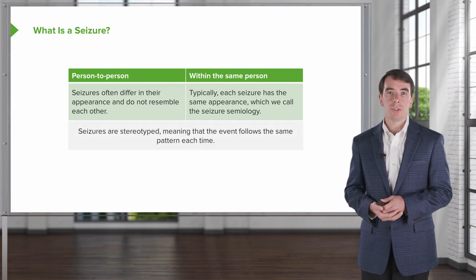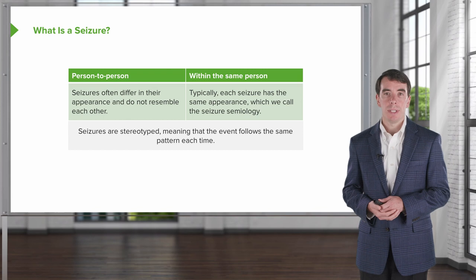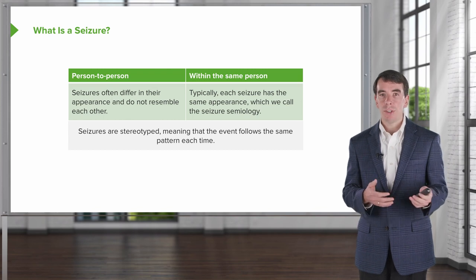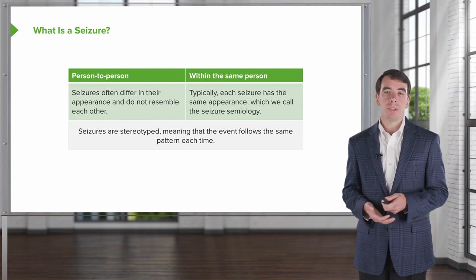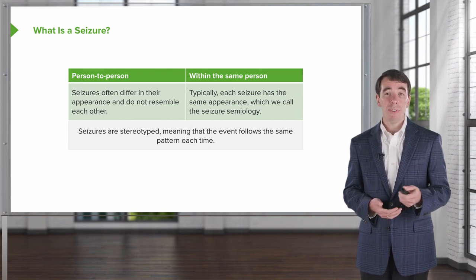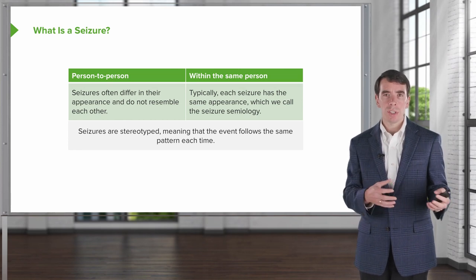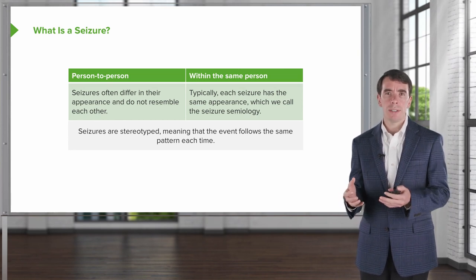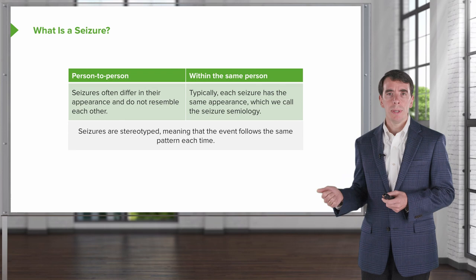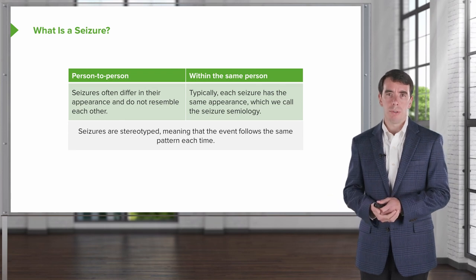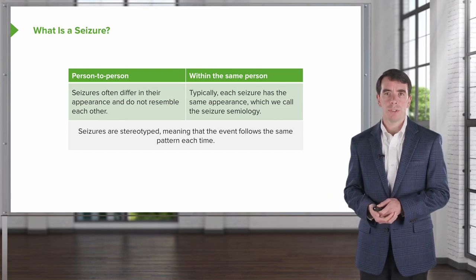Within the same person, the seizures should always look the same — we call this the seizure semiology. Seizures are stereotyped, meaning each event follows the same pattern. When evaluating patients on history, determining that events are stereotyped is critical to making a diagnosis of seizure.